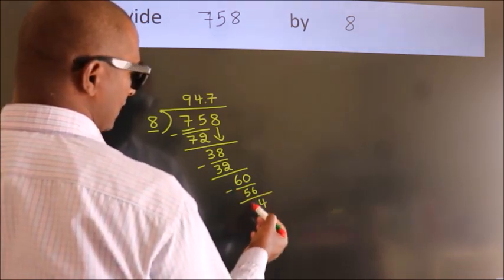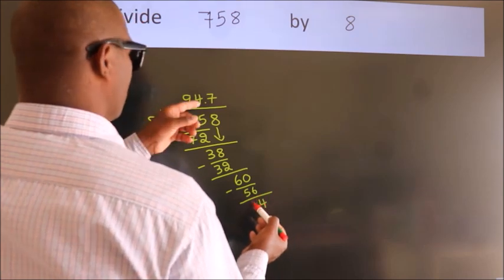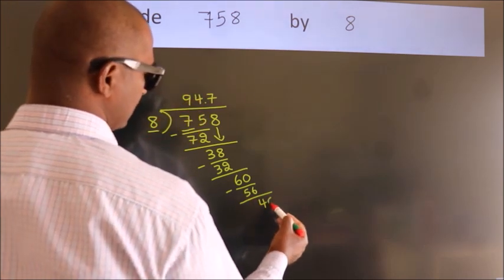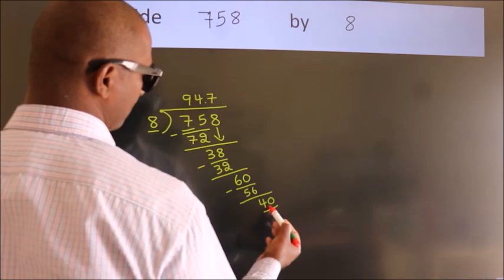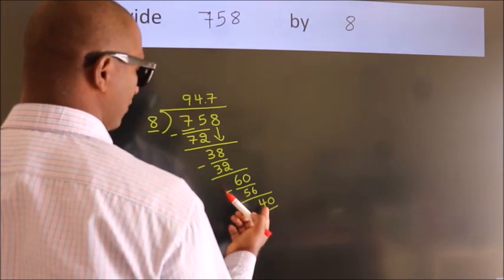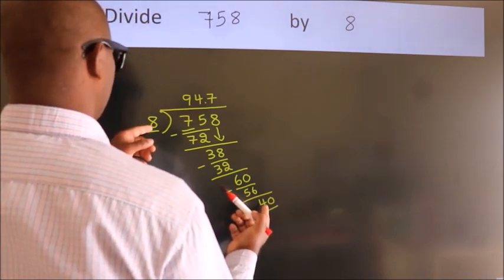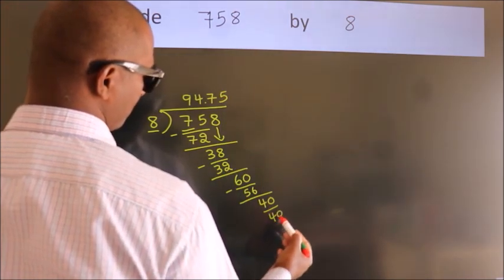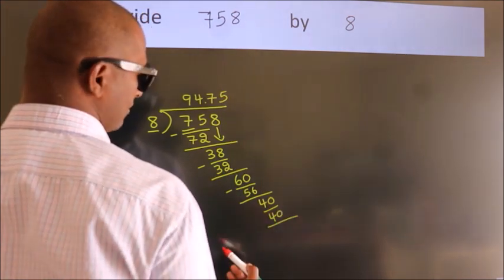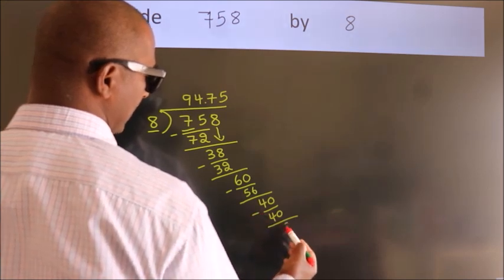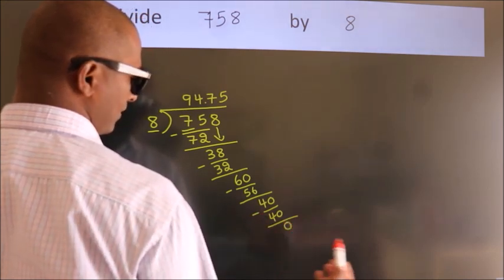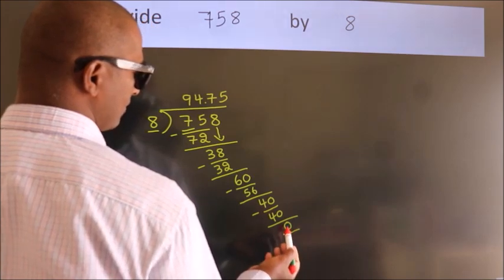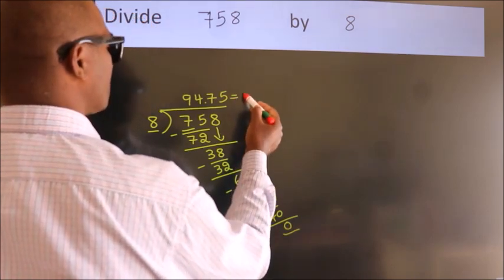After this, we already have the decimal, so directly take 0. 40. When do we get 40 in the 8 table? 8 fives, 40. Now we subtract. We get 0. Here, we got remainder 0. So this is our quotient.